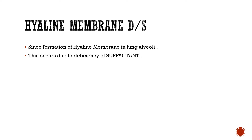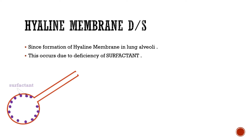Now let's discuss the pathophysiology of this disease. There is a normal alveoli which is non-collapsed because of the presence of surfactant. When we exhale, our lungs recoil, and there is a tendency to collapse. But gas exchange also occurs in expiration in the alveoli, hence a mechanism must be there to prevent collapsing. This prevention occurs due to a layer of surfactant.